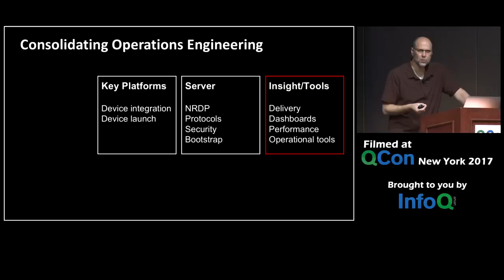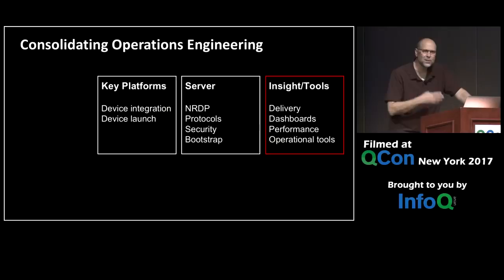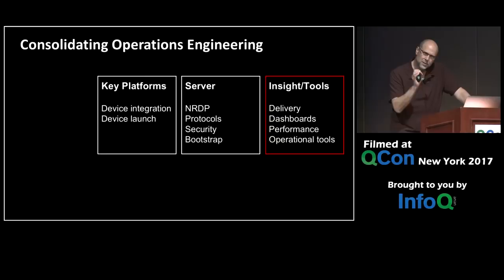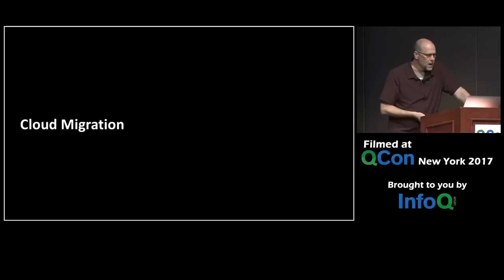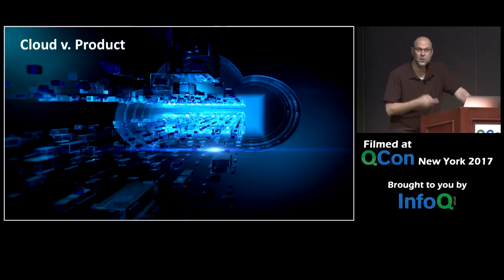We also came to realize we needed to engineer our operations because the on-call burden on everybody was too high. So we added one more component to the organizational structure — a team at the time called Insight and Tools, which you can think of as an early precursor to the DevOps function, or what I like to call operations engineering. Cloud migration was also pesky and really distracting, making it difficult to do both cloud migration and product work at the same time.